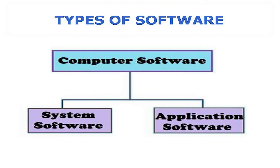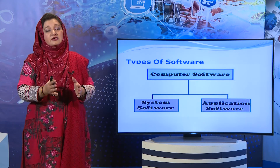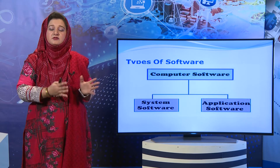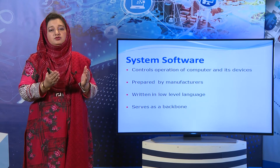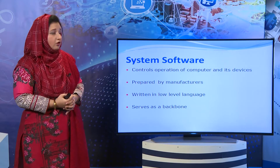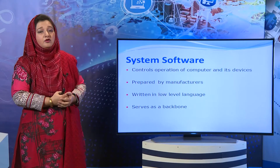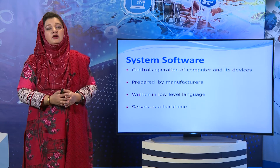Types of software — there are basically two types of computer software: سب سے پہلے system software اور دوسری type application software ہے. System software computer کے تمام operations کو control کرتا ہے اور layer کے حوالے سے بات کریں تو hardware سے directly linked ہوتا ہے. جب آپ کا computer بنتا ہے تو manufacturer system software کو design کرتے ہیں. Language کے حوالے سے یہ ہمیشہ low level language یعنی machine language میں لکھا جاتا ہے. System software ایک backbone کی طرح کام کرتا ہے جو hardware کو بھی manage کر رہا ہے اور user کے ساتھ بھی interact کر رہا ہے۔